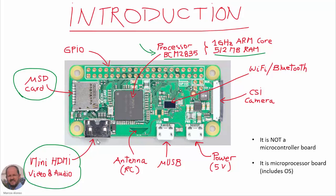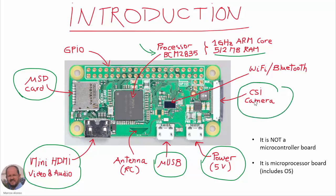We have a micro USB connector here to connect the different elements of our system - the keyboard, the mouse, the pen drive, and so on. Another micro USB connector for connecting the power supply, a 5 volt power supply. Then we have another connector for a camera with a CSI interface. We have also Wi-Fi and Bluetooth here - we can see the antenna at this point, which is based on a resonant cavity.